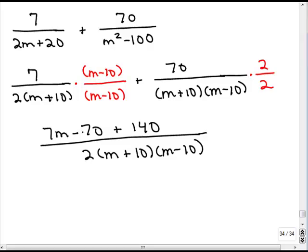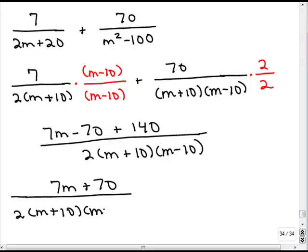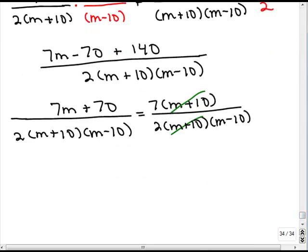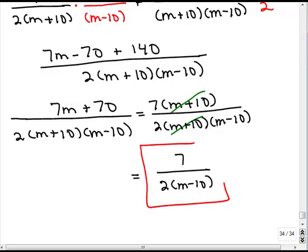We still have to simplify the numerator by adding like terms, so that gives me 7m plus 70, all over 2 times m plus 10 times m minus 10. The last thing we need to do is see if we can factor the numerator to check if anything cancels. We can take a 7 out, giving us 7 times m plus 10 over 2 times m plus 10 times m minus 10. The m plus 10 cancels, leaving us with 7 in the numerator and 2 times m minus 10 in the denominator. You could also write the denominator as 2m minus 20.